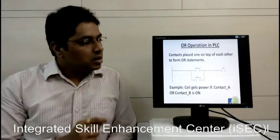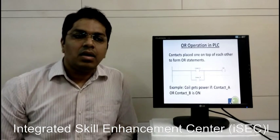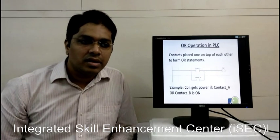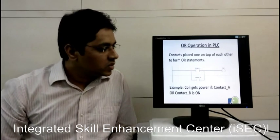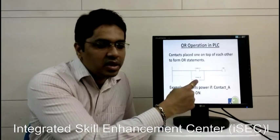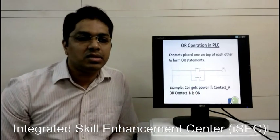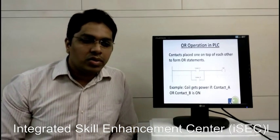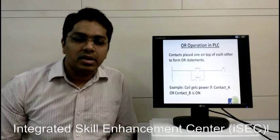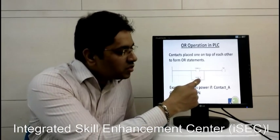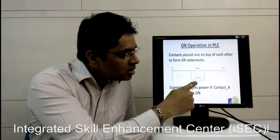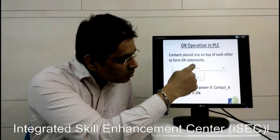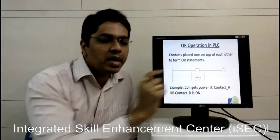Same as that, you can see here as an OR operation. Contact placed one on top of each other to form the OR statement. Contact A and contact B are placed on top of each other showing output as a coil. Here the coil will get powered ON if contact A or contact B is ON. Either one is ON, the output will be ON. If both are OFF, the output will be OFF.